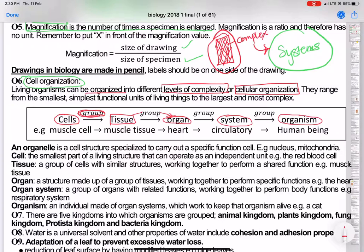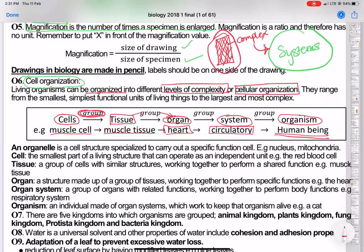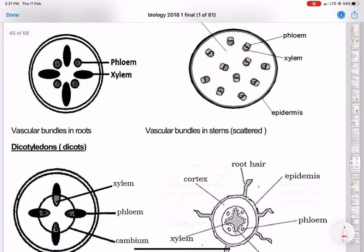For example, there is a muscle cell; the muscle cell forms muscle tissue; some muscle tissues form what is called the heart. The heart is involved in a system called the circulatory system, which is central to it. And this circulatory system is part of the human organism. It's important to understand this structure from an organism point of view.